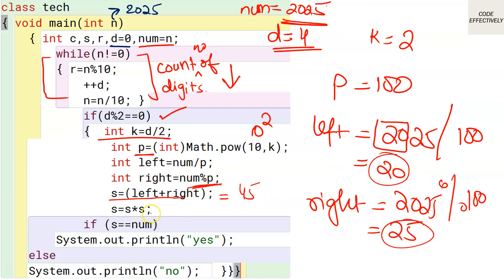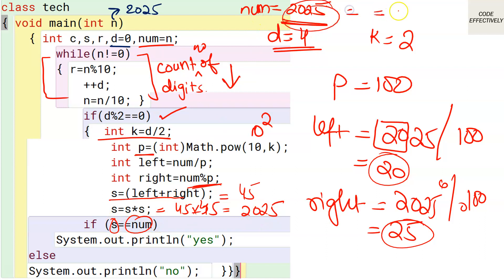Sum is 45. Then we compute s * s = 45 * 45 = 2025. We check: is 2025 equal to num (which is 2025)? Yes — the condition is true! So 2025 is confirmed to be a tech number.